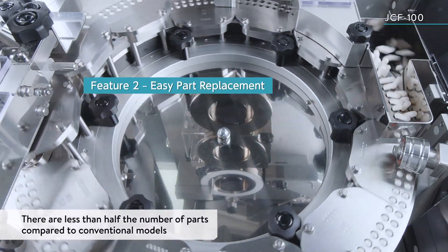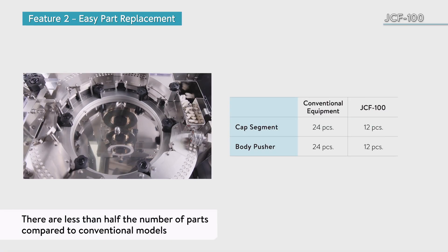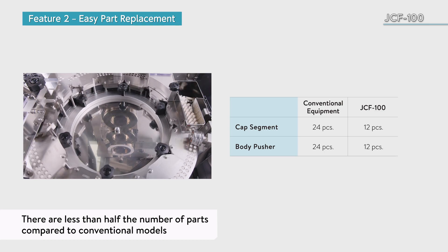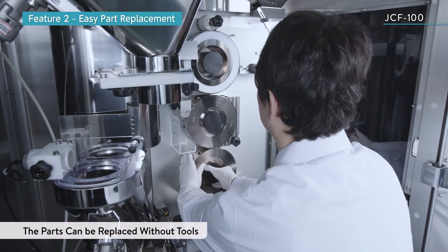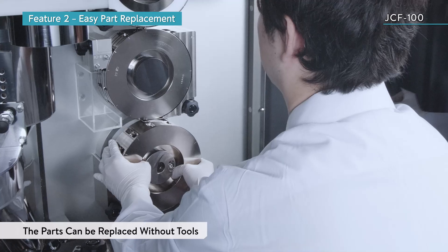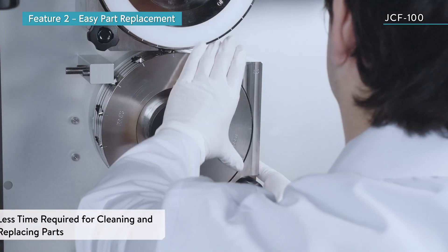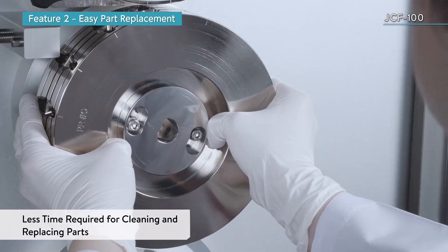The JCF-100 has less than half the number of parts compared to conventional models. In addition, the parts can be replaced without tools. This reduces the amount of time required for cleaning and replacing parts.